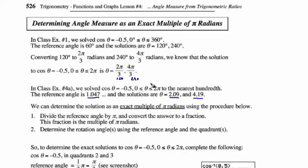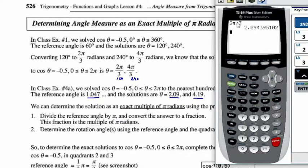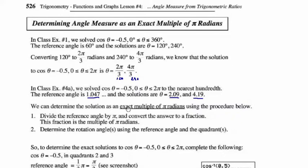So can we convince ourselves that 2 pi over 3 is the same as 2.09? In radian mode, 2 pi divided by 3 gives us 2.09 rounded to the nearest hundredth — yes! So here is the procedure: Step 1, take the reference angle found using cos inverse of 0.5 on the calculator. Since we know a pi is part of the answer, divide that answer by pi to get a decimal fraction. Then convert that decimal to a fraction using math fraction, and we get 1 third. Put the pi back in: 1 third times pi equals pi over 3. Then determine the rotation angles using the reference angle and the quadrants.